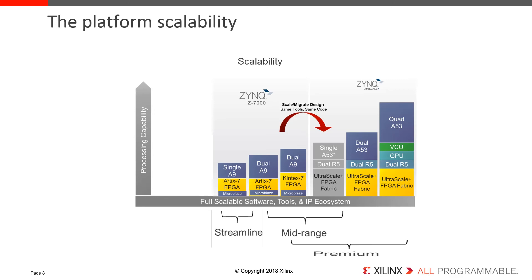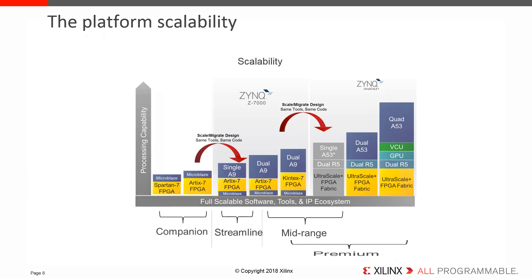Beyond that, probably appealing for more complex applications or multi-drive units with human machine interfaces, there is the quad-core A53 with a graphics processing unit. On the left side there are the pure FPGA or PL-only devices which don't have any built-in ARM processing units.